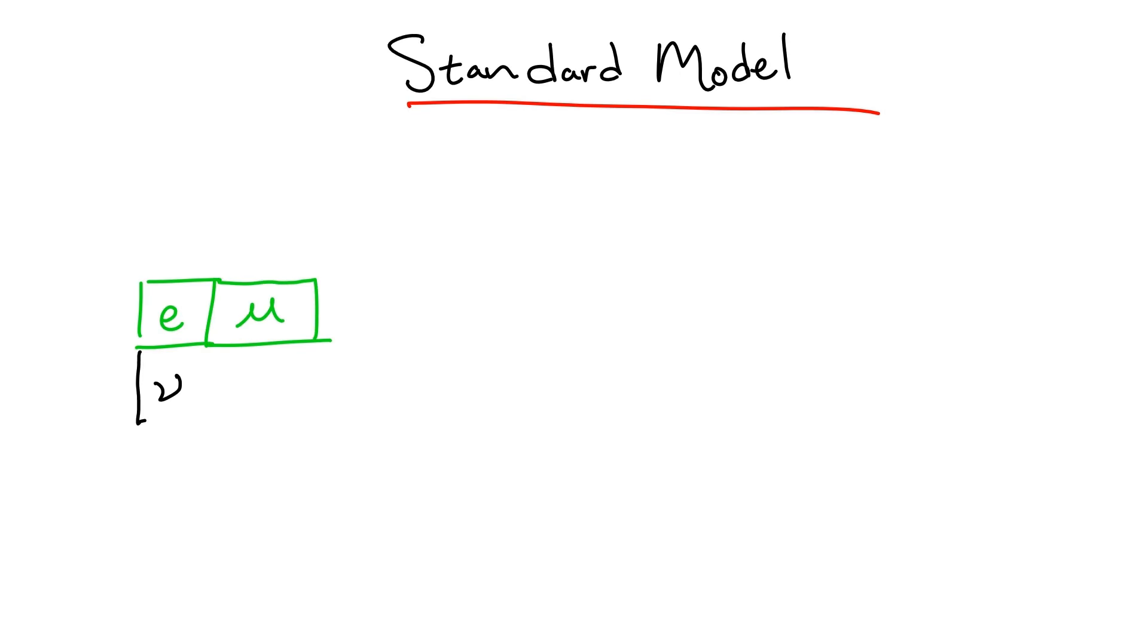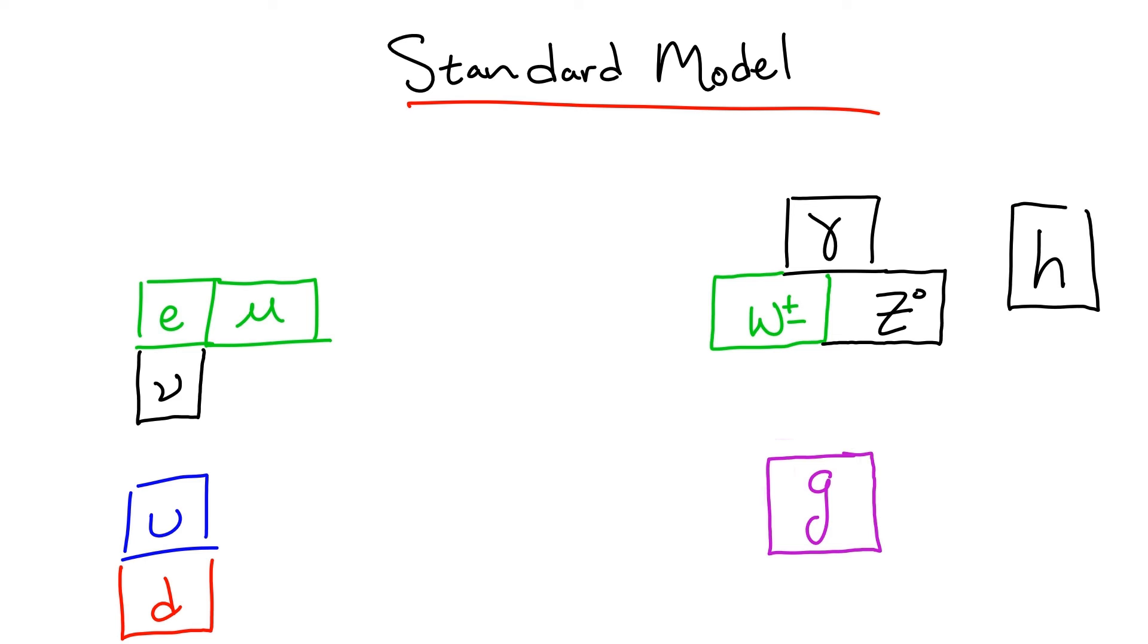In the last video of the Standard Model series, we finished up discussing all of the interactions of the Standard Model by unifying the electromagnetic and weak interactions into one combined electroweak interaction. This, along with the strong interaction of quantum chromodynamics, makes up the backbone of the Standard Model and describes all of the interactions that we know of aside from gravity. However, while these are incredibly vital to our understanding of the universe, there is more to the Standard Model than just its interactions.